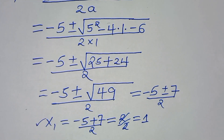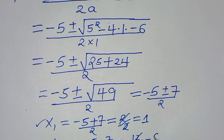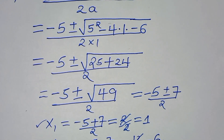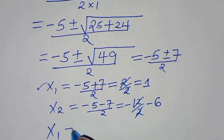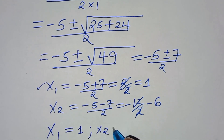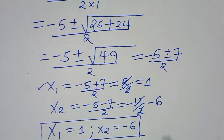So x₁ = (-5+7)/2 = 2/2 = 1. And x₂ = (-5-7)/2 = -12/2 = -6. So x₁=1 and x₂=-6 are the first set of solutions.